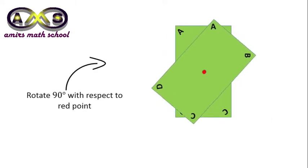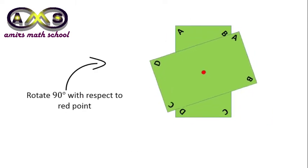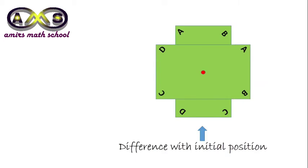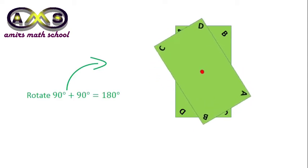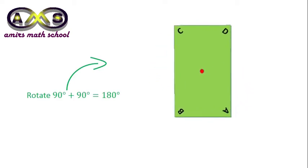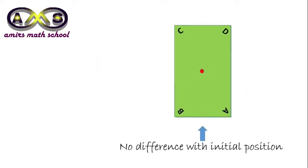For a rectangle, after 90 degree rotation with respect to the red point, there is a difference with the initial position. After 180 degree rotation, there is no difference with the initial position.